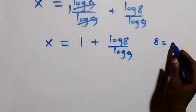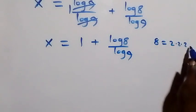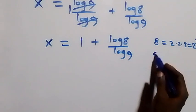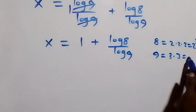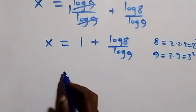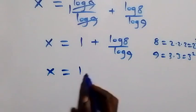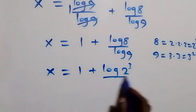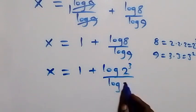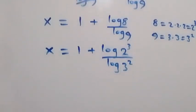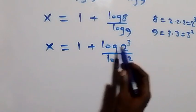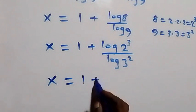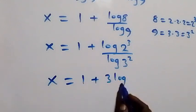We can write 8 as 2 times 2 times 2, which is 2 raised to power 3, and also write 9 as 3 times 3, which is 3 squared. So what we have becomes x equals 1 plus log(2 raised to power 3) over log(3 squared). Then following the power law of logarithm, we take the exponents to the front: x equals 1 plus 3 log 2 over 2 log 3.